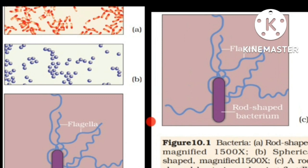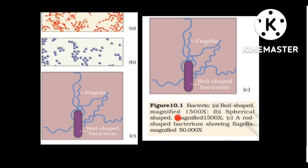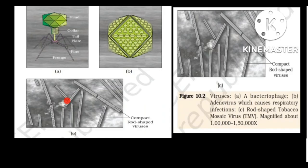Chapter 10: Microbes in Human Welfare. In figure 10.1a, rod-shaped bacteria (bacillus) are magnified 1500 times. Figure b shows spherical-shaped bacteria (coccus), also magnified 1500 times. Figure c shows one rod-shaped bacterium with flagella, magnified 50,000 times.